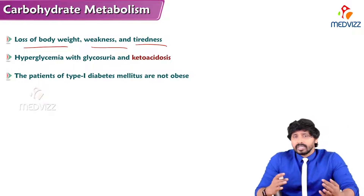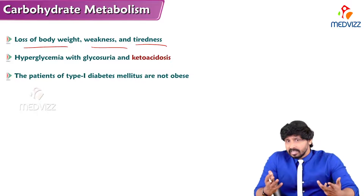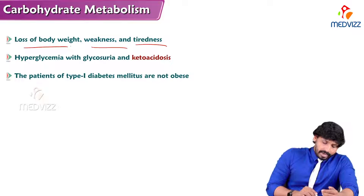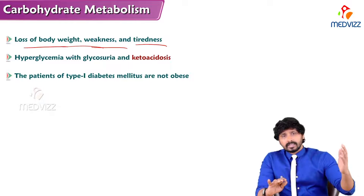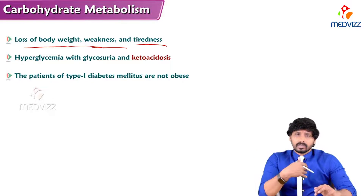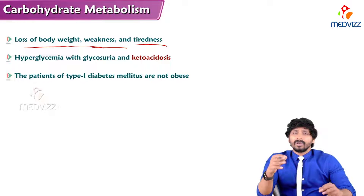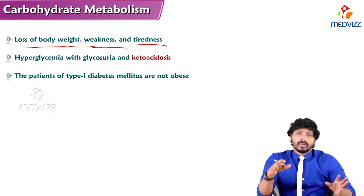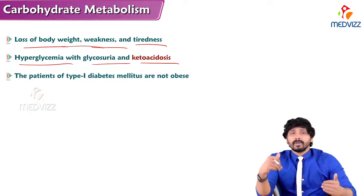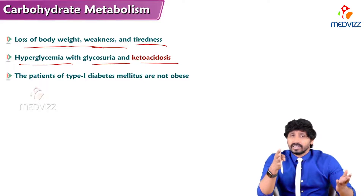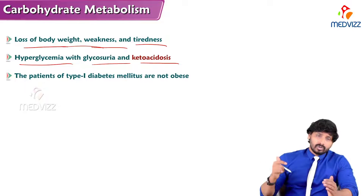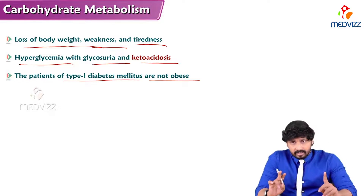Other symptoms include loss of body weight, weakness, and tiredness, because glycolysis, the citric acid cycle, and fatty acid degradation are not functioning properly. Fatty acid degradation increases while fatty acid synthesis decreases. Proteins are also degraded to compensate for energy, reducing total muscle mass — causing weight loss and weakness. Hyperglycemia with glycosuria and ketoacidosis also occur, as excess acetyl-CoA from protein and lipid degradation is diverted into ketone body synthesis, leading to ketoacidosis. Patients with Type 1 diabetes are not obese.